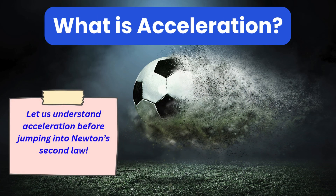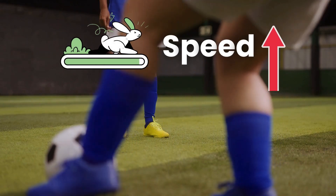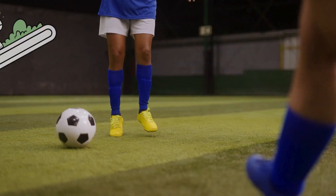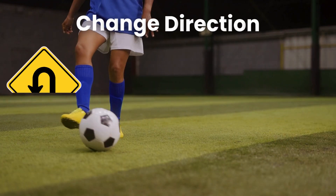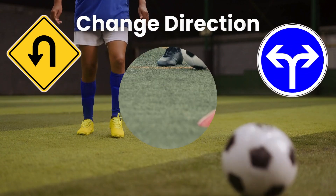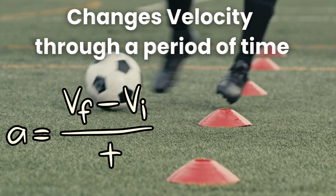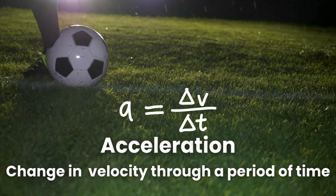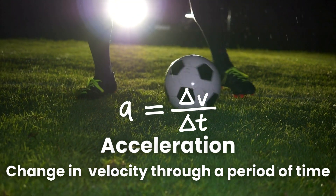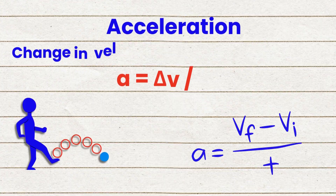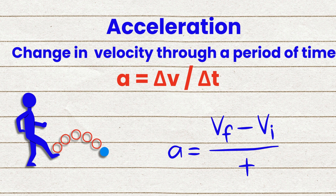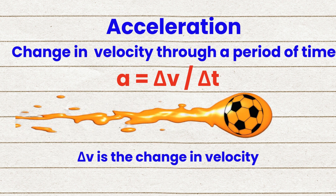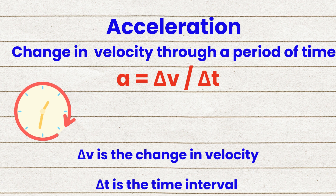What is acceleration? In this example, the ball speeds up, slows down, and changes direction. In other words, the ball changes its velocity through a period of time. This change in velocity over a period of time is acceleration. So acceleration A equals delta V over delta T, where delta V is a change in velocity and delta T is a time interval during which the velocity changes.